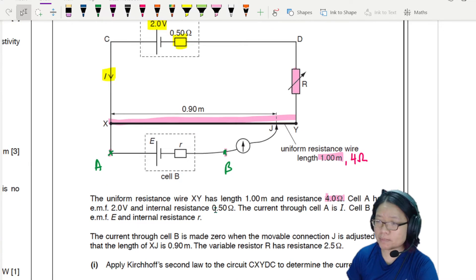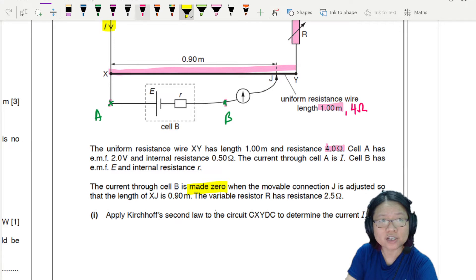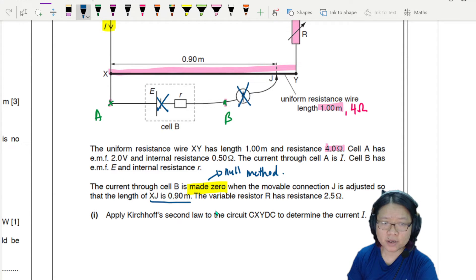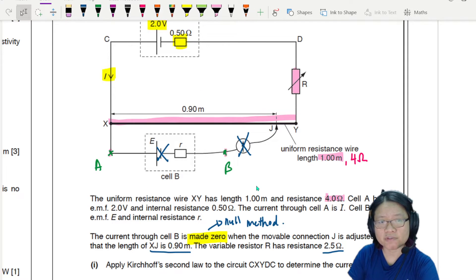The current through cell B is made 0. We are still using the null method. Meaning there's no current flowing through cell B. Meaning there's no current, no galvanometer or ammeter reading. When the movable contact J is adjusted so that the length XJ is 0.9 meter. Variable resistor R has a resistance of 2.5 ohm. We have adjusted this to 2.5 ohm.